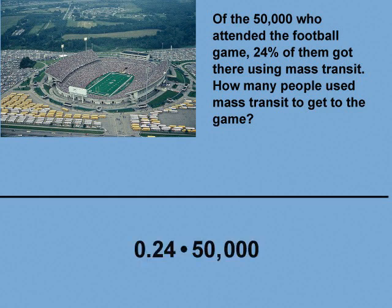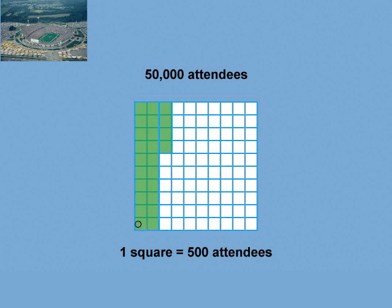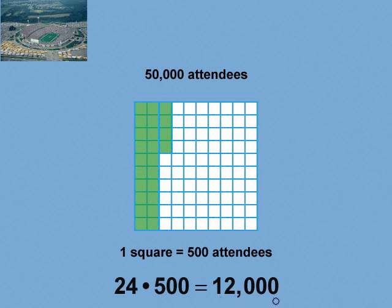We could solve it this way: 0.24 times 50,000. But let's use a visual model. Here is a 10 by 10 grid, where each small square represents 1%. The entire grid represents the 50,000 attendees. So each small square — each 1% section — represents 500 attendees. Now shade in 24 small squares to get 24%. To find the total, simply multiply 24 by 500 to get 12,000. So 12,000 attendees at the game used mass transit to get there. This visual model is helpful in showing how to work with percents by working with whole numbers.